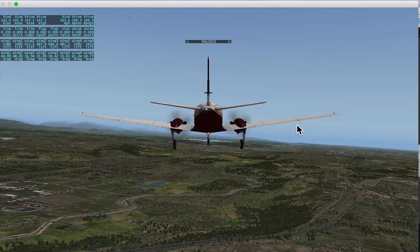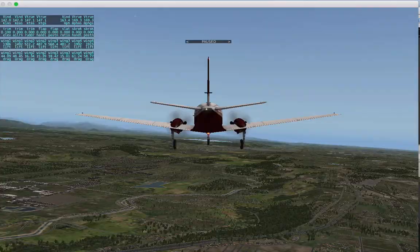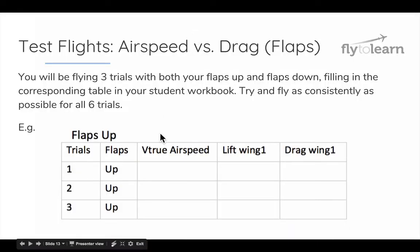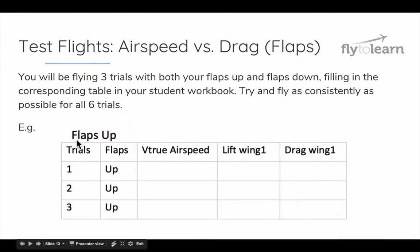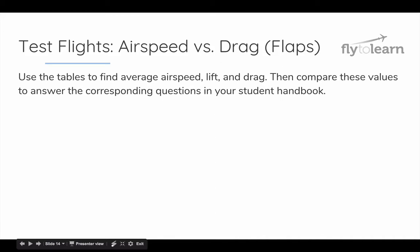For this lesson, you are going to be flying the plane with both the flaps up and the flaps down. For both of those options, you are going to fly three trials. Be sure and fill out the corresponding tables in your student handbook and use these to find averages. You are going to fly three trials with both the flaps up and the flaps down, and use the averages to compare airspeed, lift, and drag. Answer all the corresponding questions in your student handbook.